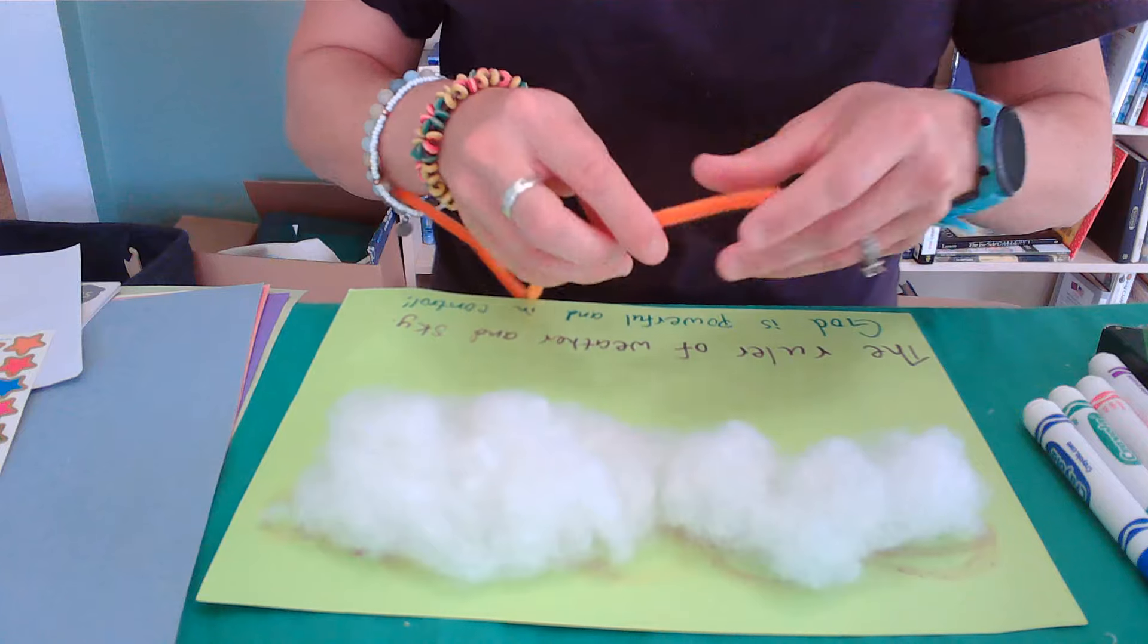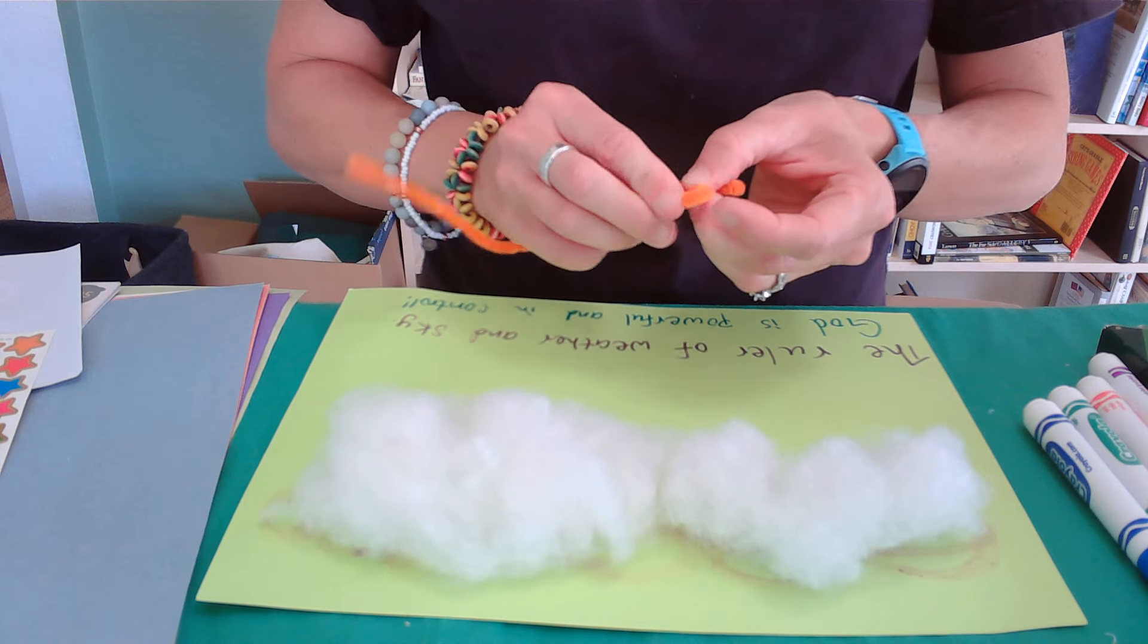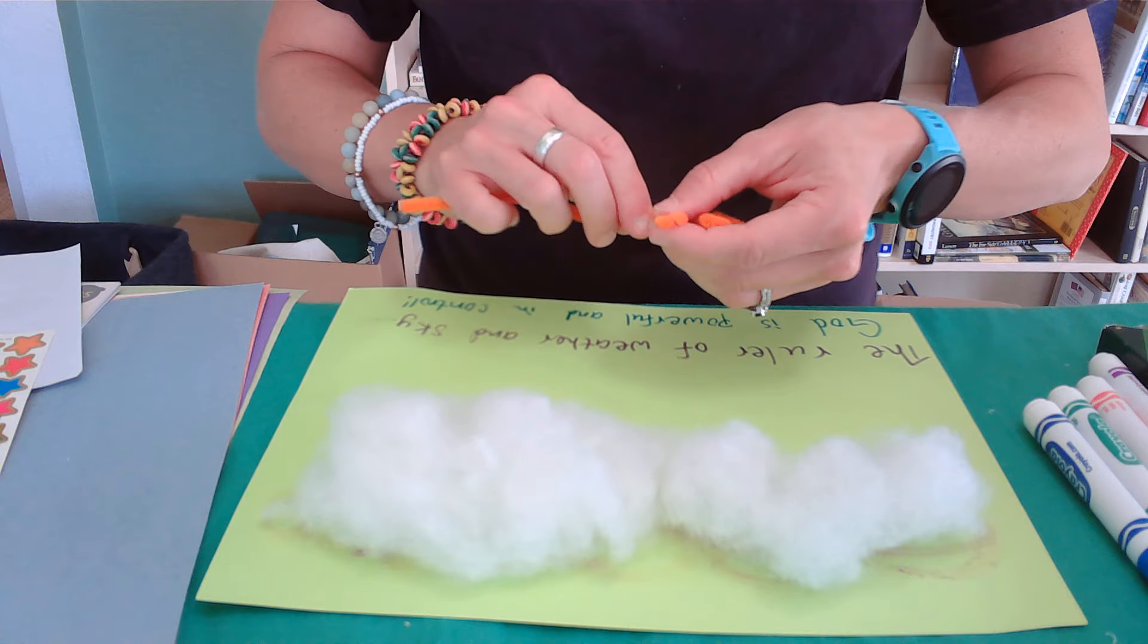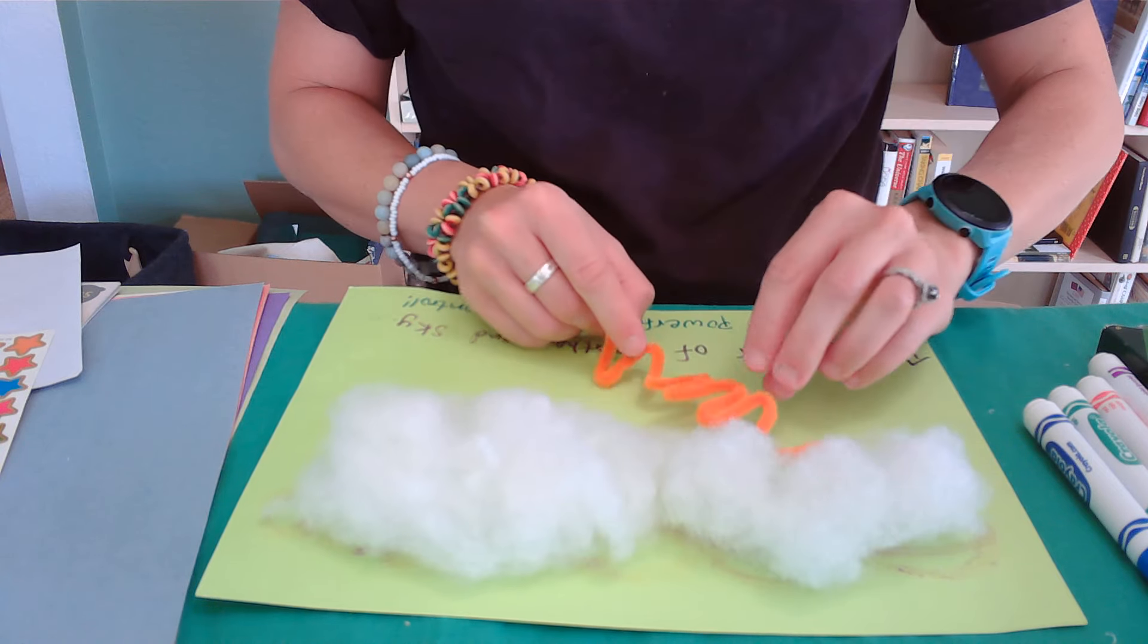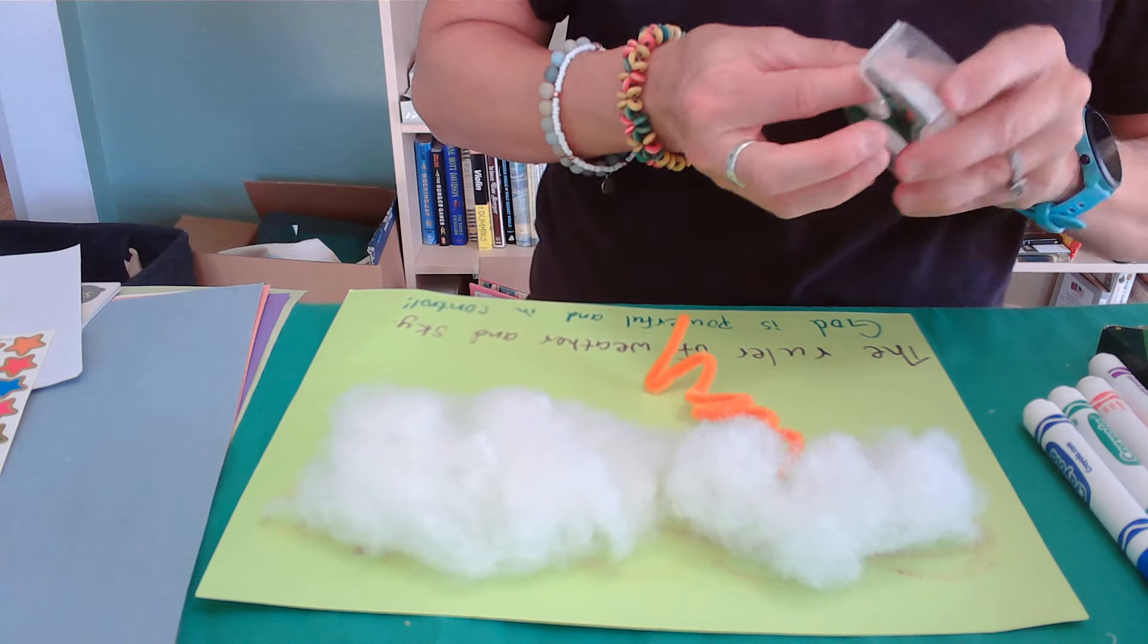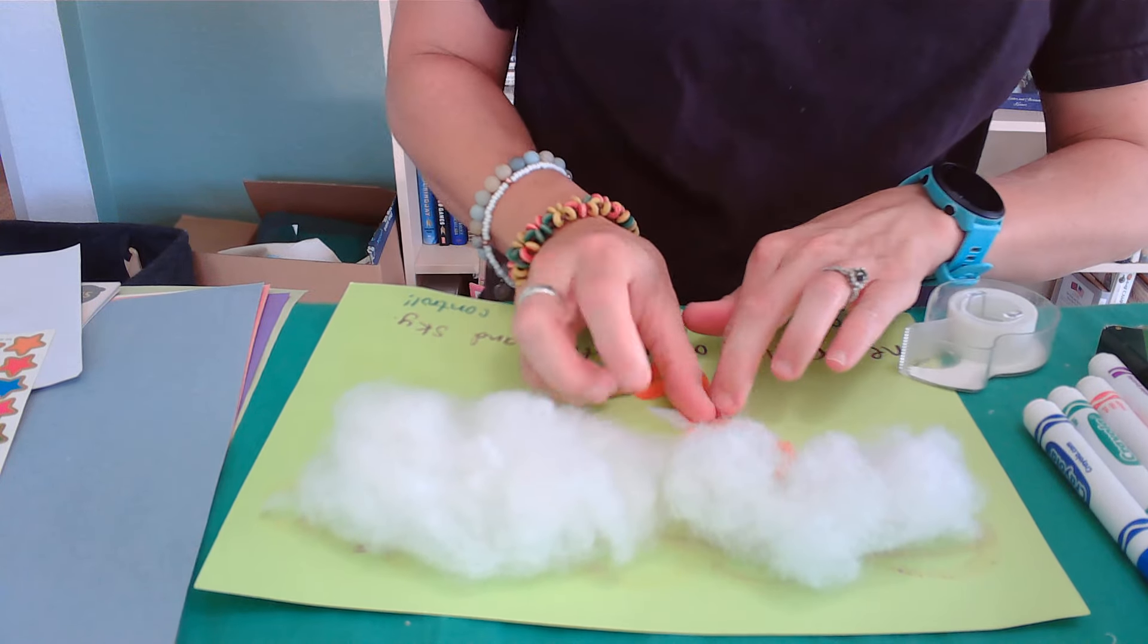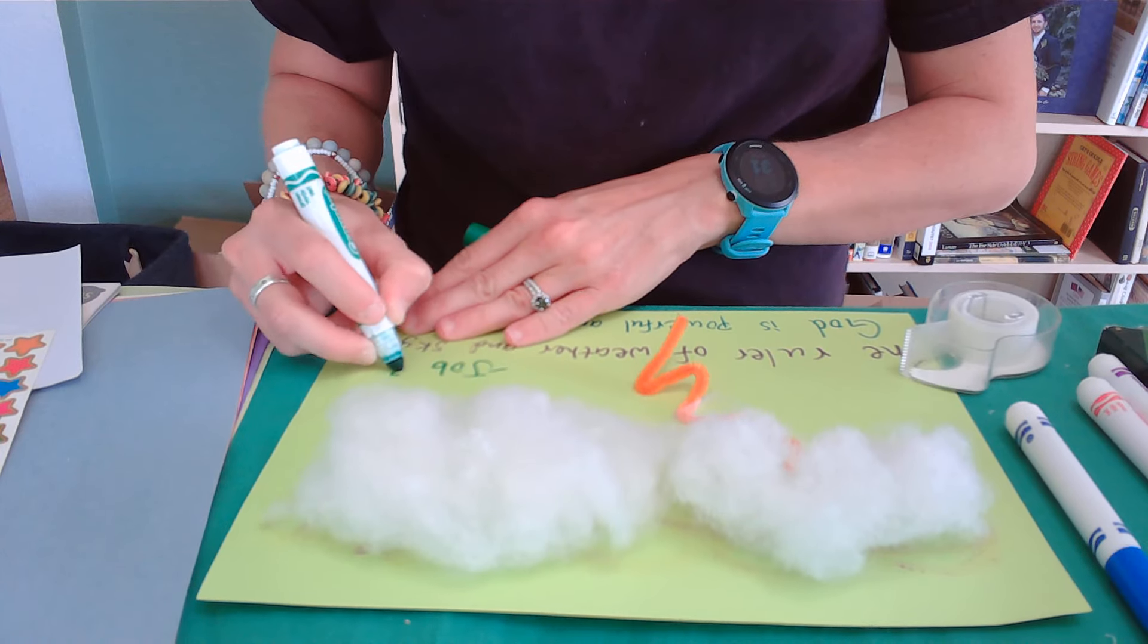And then coming down from the clouds I'm going to create some zig-zaggy lightning here. And then I'm going to tape on my zig-zaggy lightning. And let's not forget our reference. There we go.